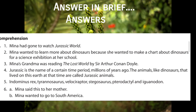Then fourth question: What are Jurassic animals? Mina asked her grandmother what a Jurassic animal is. The answer is: Jurassic is the name of a certain period millions of years ago. The animals like dinosaurs that lived on this earth at that time are called Jurassic animals.